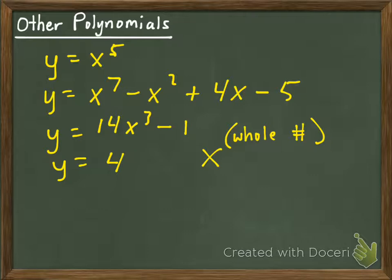X raised to a whole number. Let me zoom in here so I can write it better. As long as x is being raised to a whole number, we have a polynomial. You're looking at this one here, maybe, and you're thinking, where's no x? Well, 0 is a whole number, and so the constant 4 can be written as 4 times x to the 0 power. It still falls into the category of polynomials.